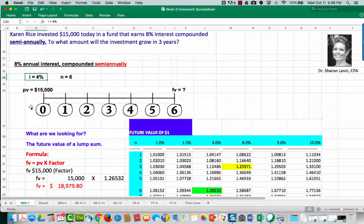This is the timeline we have at time 0, which is right now, the investment has a present value of $15,000. At the end of 3 years or 6 periods, the future value of the investment will be some number greater than $15,000. That's what we're looking for. We're looking for the future value of the lump sum of $15,000 where interest compounds semi-annually.